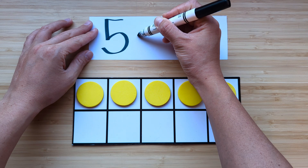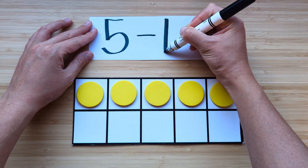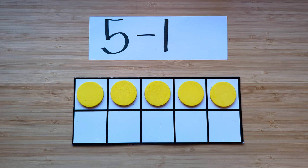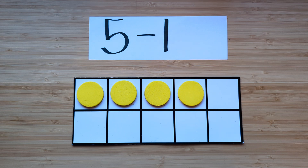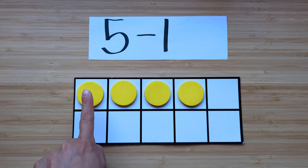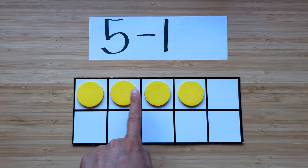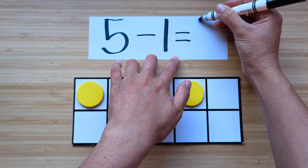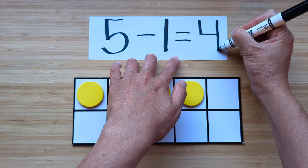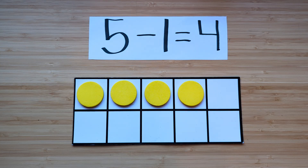What's one less than five? Let's count. One, two, three, four. One less than five is four.